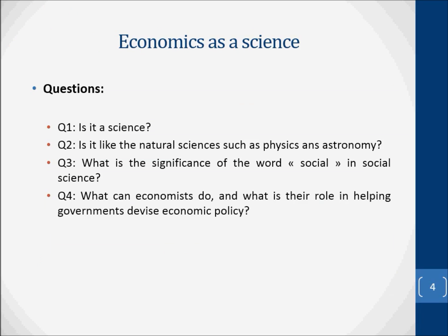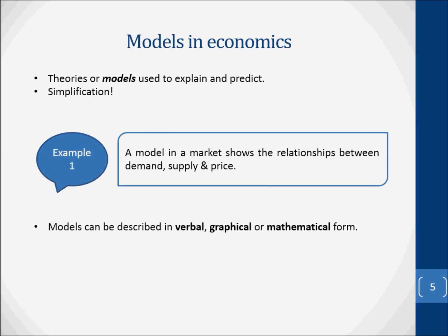Economics is one of the social sciences. So in what sense is it a science? Is it like the natural sciences such as physics and astronomy? What is the significance of the word 'social' in social science? What can economists do, and what is their role in helping governments devise economic policy? The methodology employed by economists has a lot in common with that employed by natural scientists. Both attempt to construct theories or models, which are then used to explain and predict.